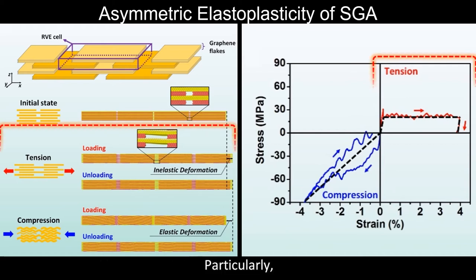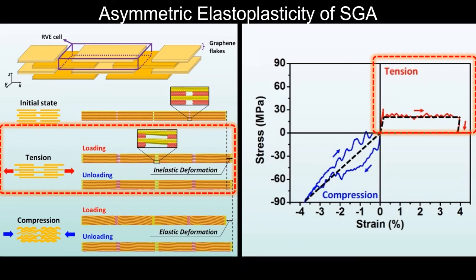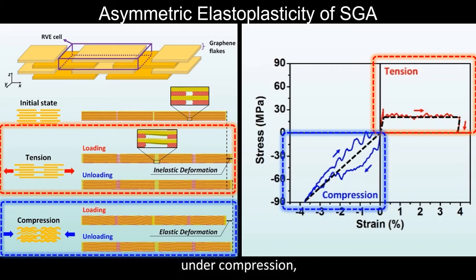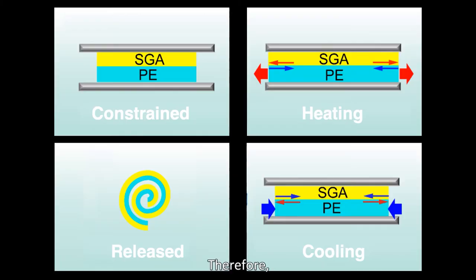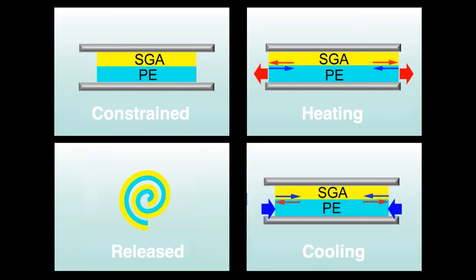Particularly, SGA exhibits high plasticity under tension due to irreversible sliding between the graphene flakes. In contrast, under compression, SGA shows reversible ripple-like deformation. Therefore, after undergoing a constrained tempering process, there is residual compressive stress in SGA but residual tensile stress in PE. It leads to the curling with PE wrapped inside after removing the constraint.